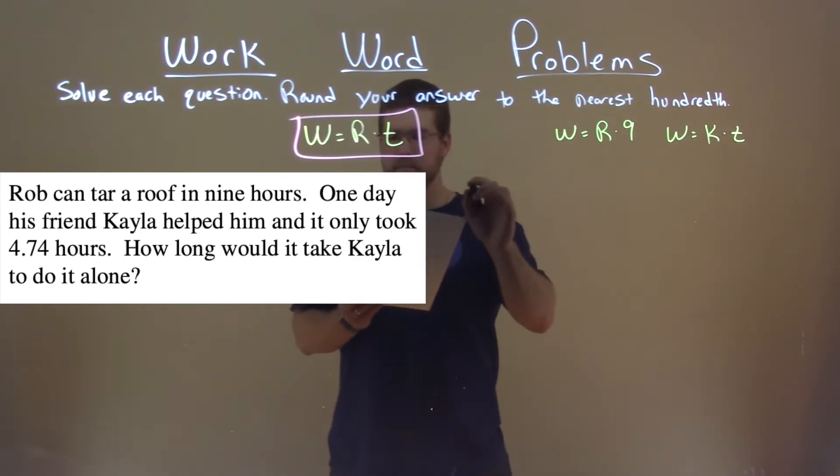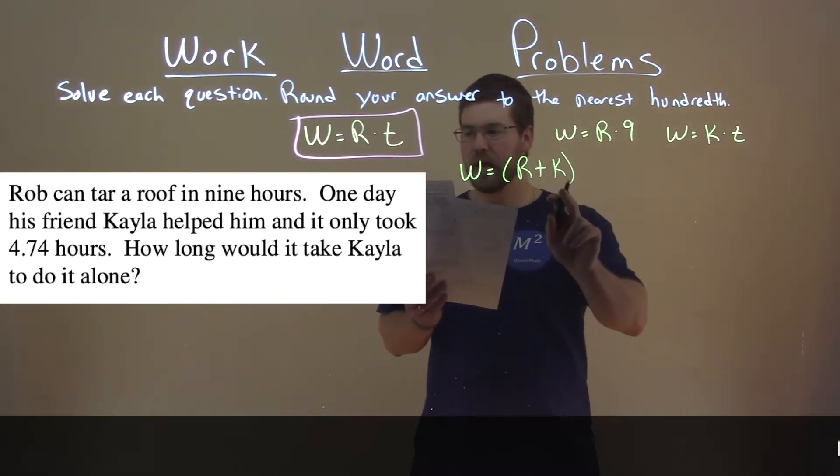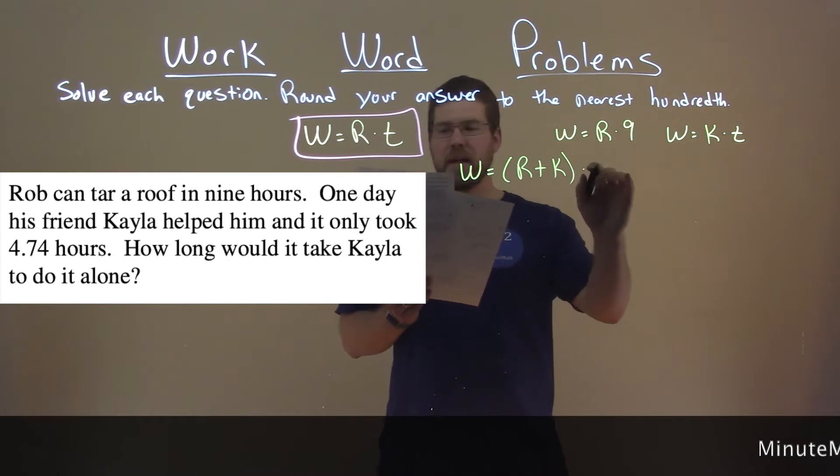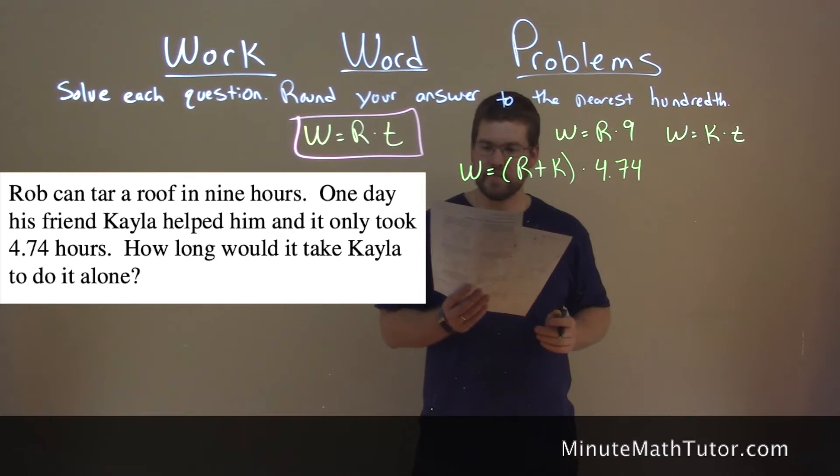But together, we know that same job w is equal to r plus k, each one's work rate added together. They're working together, and it takes them 4.74 hours.